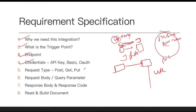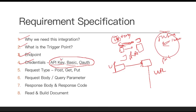Next is the credential. A credential is used to log in to a system — similar to a username and password. For integration, there are various types of credentials: API key, basic authentication, and OAuth. We will discuss this topic in more detail later, but remember that to integrate from one instance to another you need a credential in one of these forms.